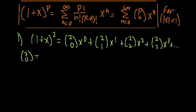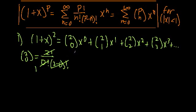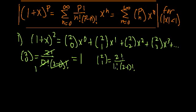So 2 choose 0 is 2 factorial over 0 factorial times 2 minus 0 factorial. Well, 0 factorial is just 1, and 2 minus 0 is 2 factorial. So the 2 factorial on top cancels the 2 factorial on the bottom, and we're left with 2 choose 0 equal to 1. Now 2 choose 1 is 2 factorial over 1 factorial times 2 minus 1 factorial. 1 factorial is 1, and 2 minus 1 factorial is also 1. So we have 2 times 1 divided by 1 times 1, which is just equal to 2.